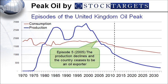Episode number five: from 1999 until 2005, the oil production declines and the country ceases to be an oil exporter. The decrease in production is quite strong. Regardless of new technical capabilities and new investments, the production just decreases.